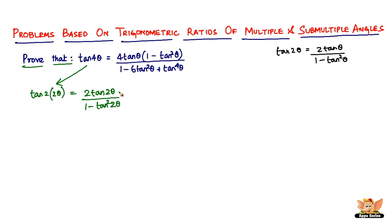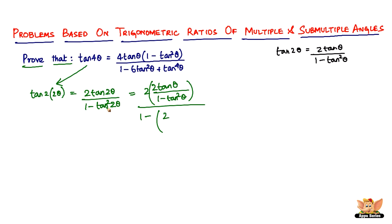Now we have tan(2θ) here, so we can split it again. It becomes 2 times — keeping this 2 as it is — and tan(2θ) is (2 tan θ)/(1 minus tan² θ), divided by 1 minus tan²(2θ), where tan(2θ) is written as (2 tan θ)/(1 minus tan² θ), and that whole expression gets squared because it is tan²(2θ) — that's the only difference.